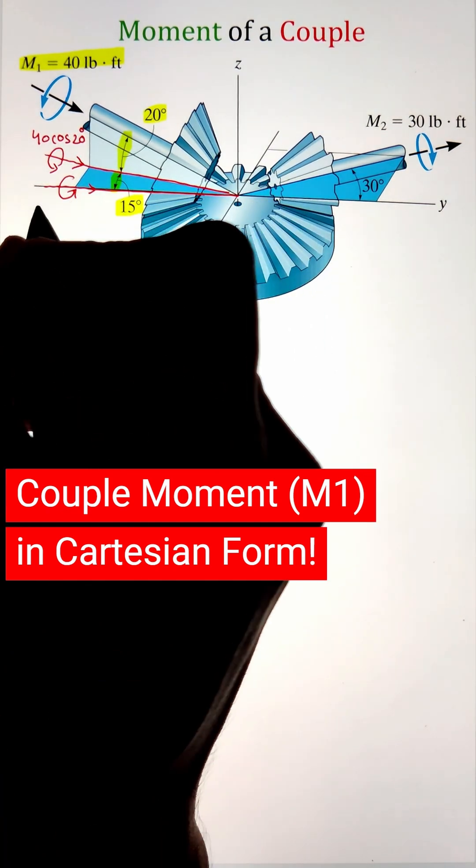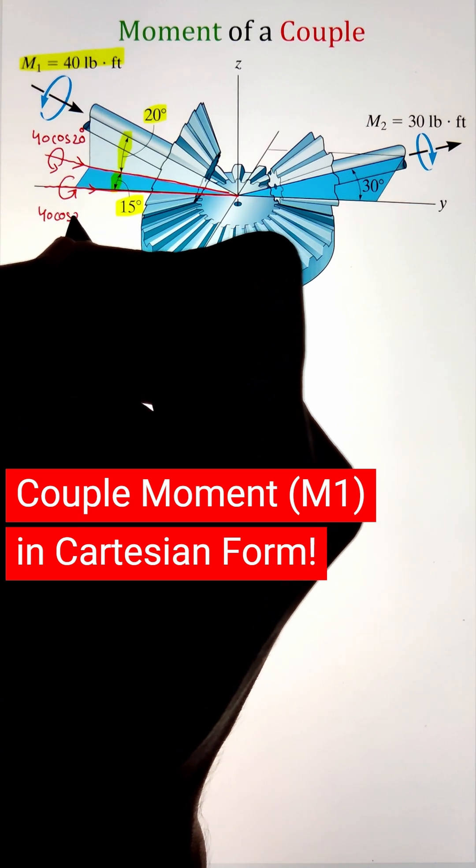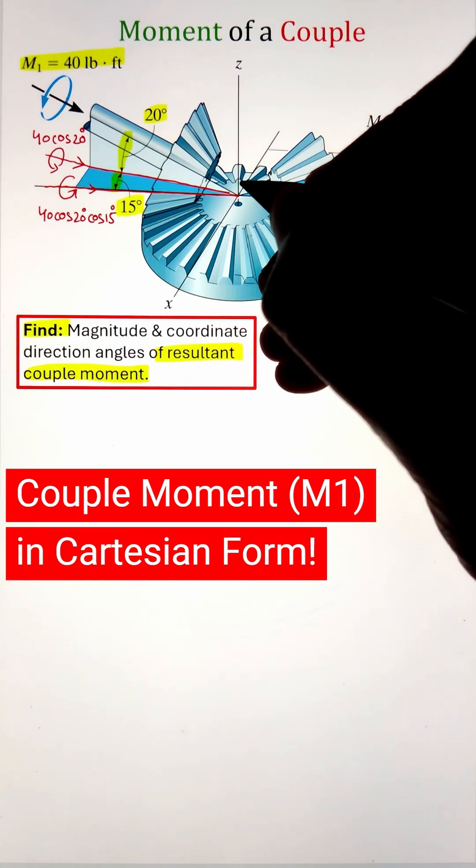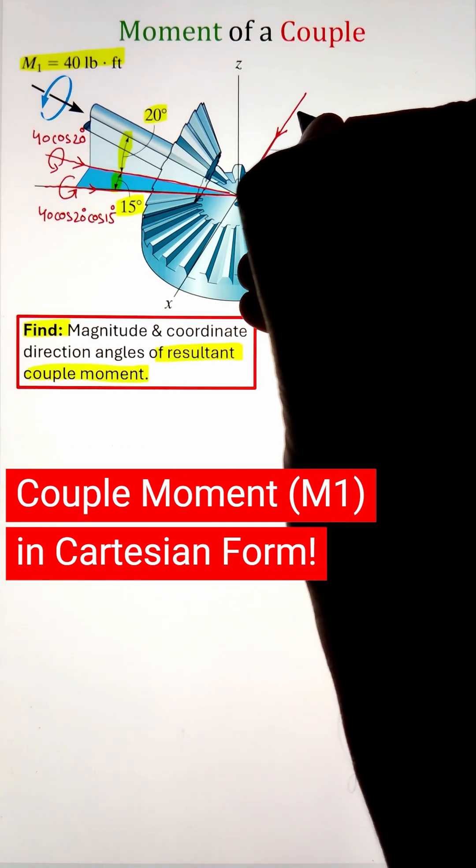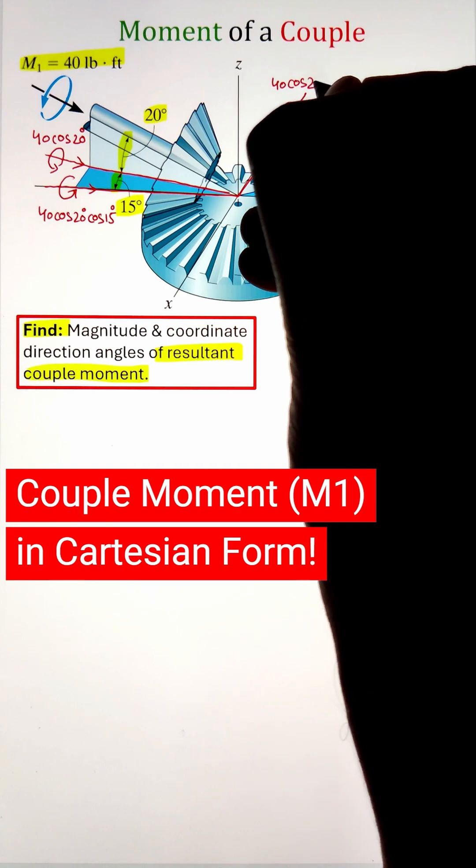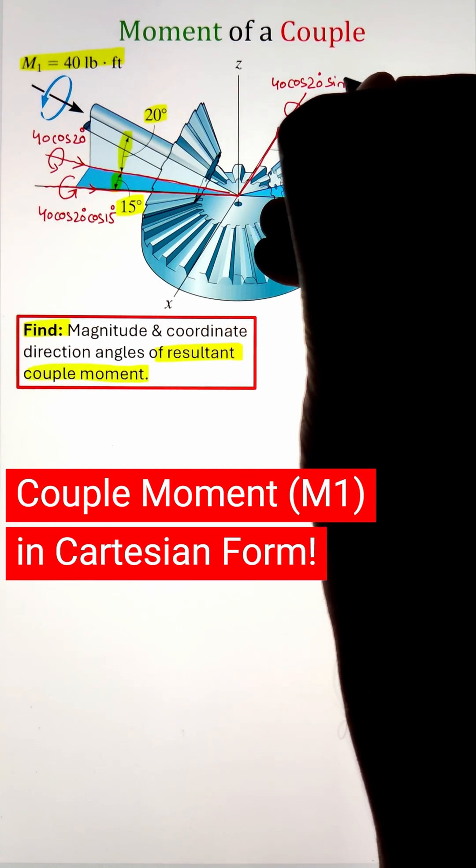In order to further resolve it along the x-axis and y-axis, we know that this line is making an angle of 15 degrees with respect to the y-axis. So taking the cos 15 function will project it along the y-axis, whereas if we take the sine 15 function, it will project it along the x-axis.